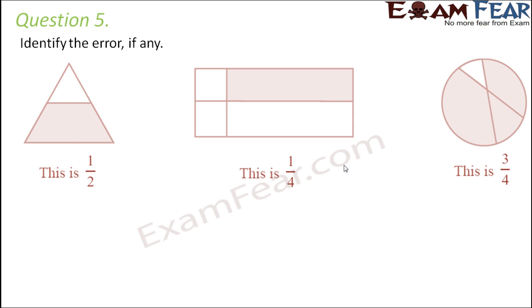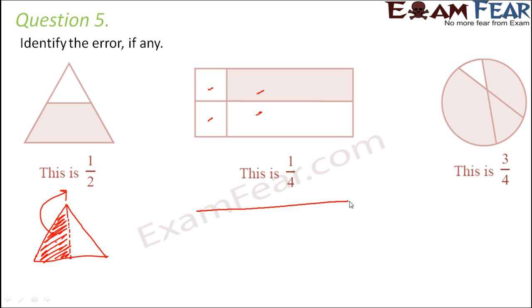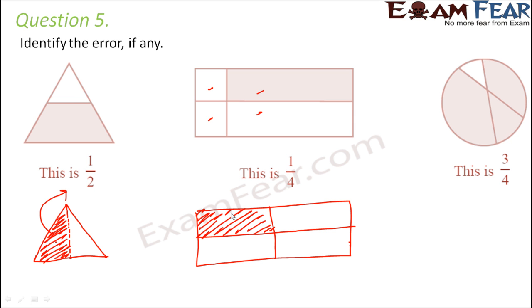Question number five: identify the error, if any. First diagram is labeled 1 by 2 — but is it really? No, because when we say 1 by 2, we mean one part out of two equal parts. In this case the parts are not equal, so it is not truly 1 by 2. To correctly show 1 by 2 you must divide the shape into two equal halves. Similarly, the second diagram labeled 1 by 4 is divided into 4 parts, but they are not equal, so it is not 1 by 4.